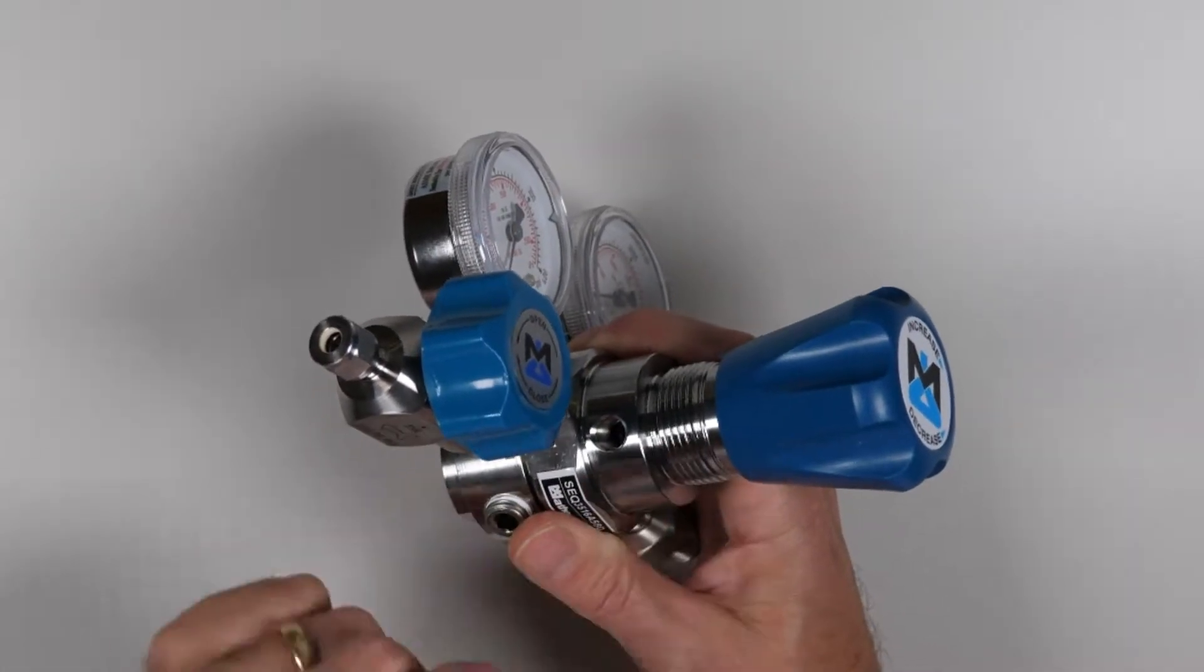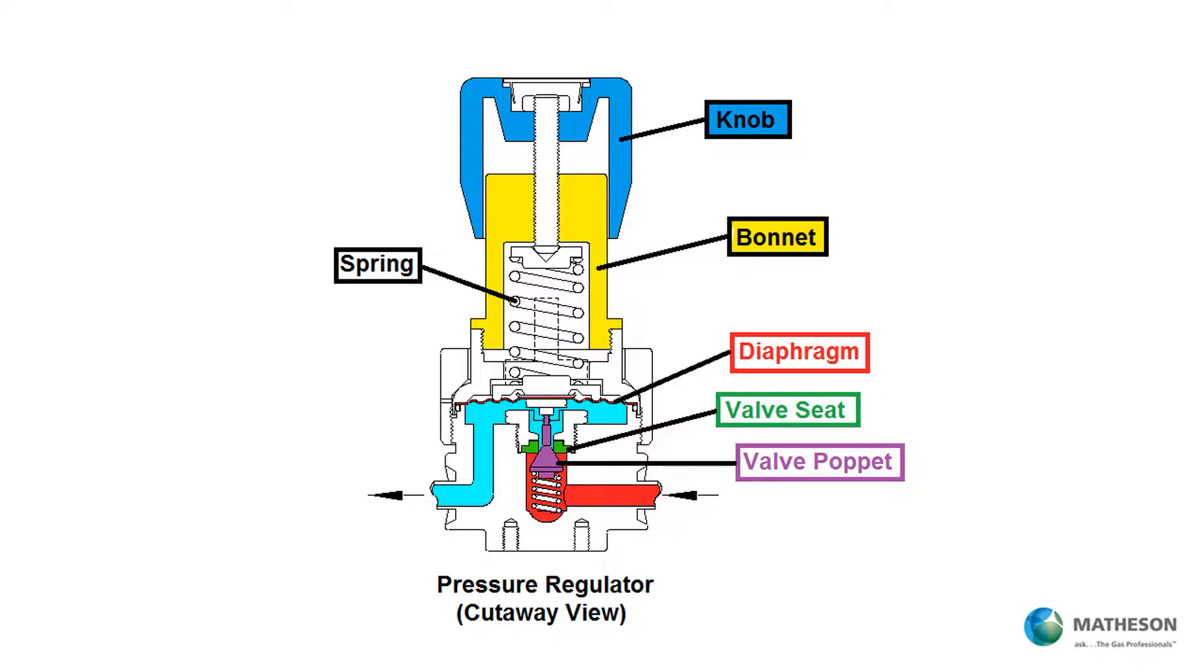This is the bonnet which holds the spring. When the regulator hand knob is turned, the spring is compressed. The spring displaces the diaphragm. The diaphragm then pushes on the valve poppet, causing it to move away from the valve seat. The orifice becomes larger in order to provide the pressure and flow required.